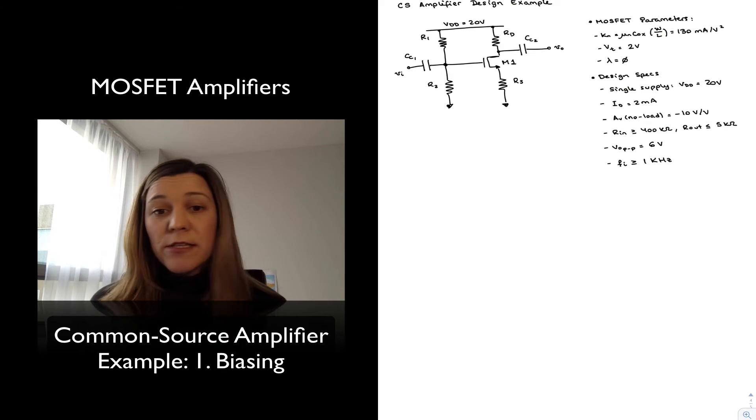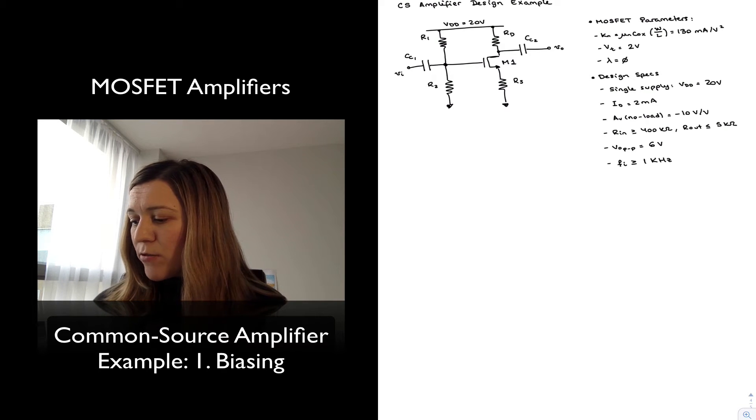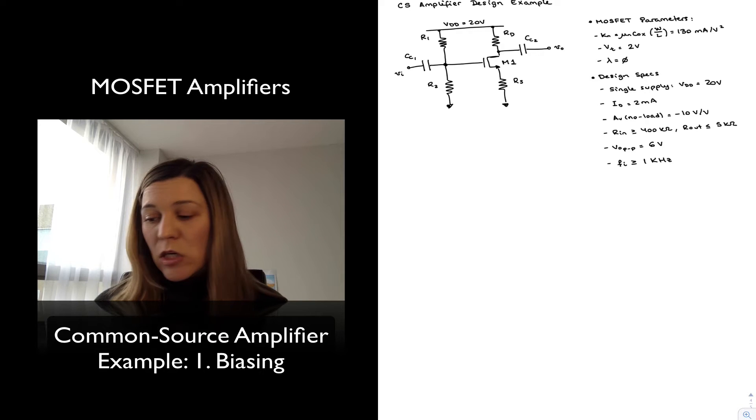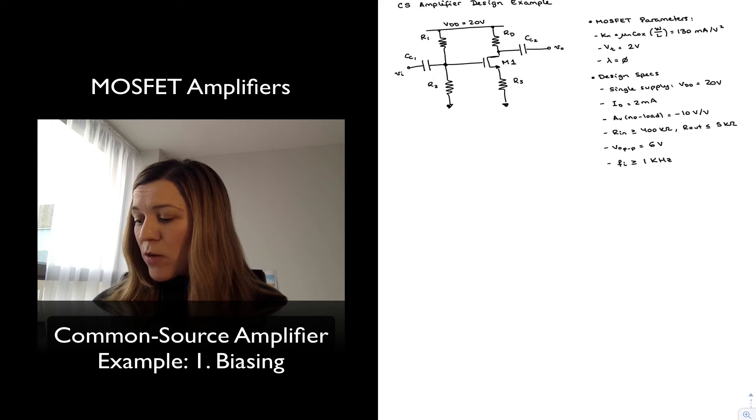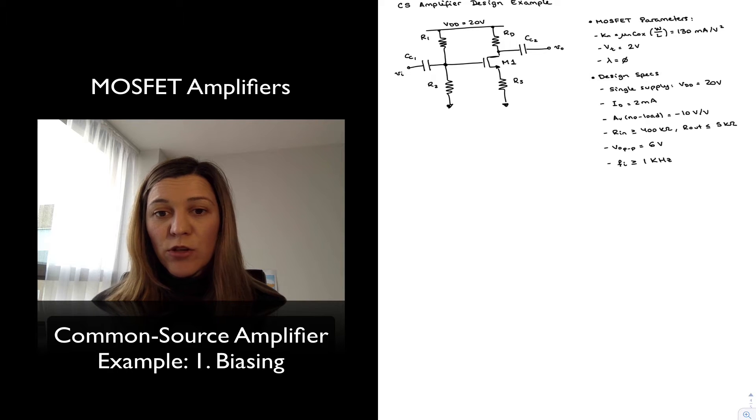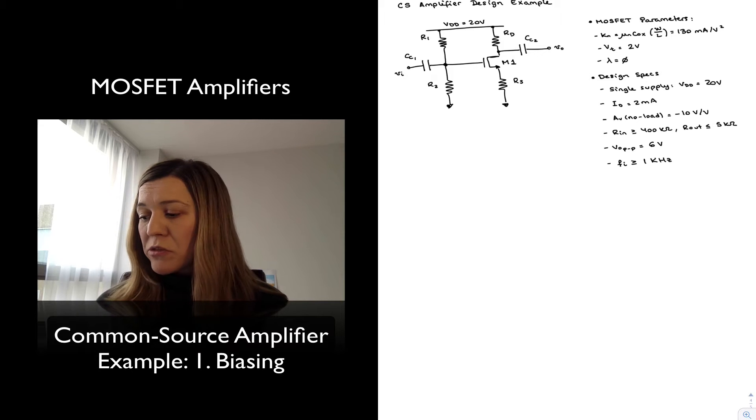These are my design specs. I am to run this from a single supply of 20 volts with a biasing current of 2 milliamps. My voltage gain, assuming no load connected at the output, is negative 10 volts per volt. I want an input resistance greater than or equal to 400 kilo-ohms and output resistance less than or equal to 5 kilo-ohms.